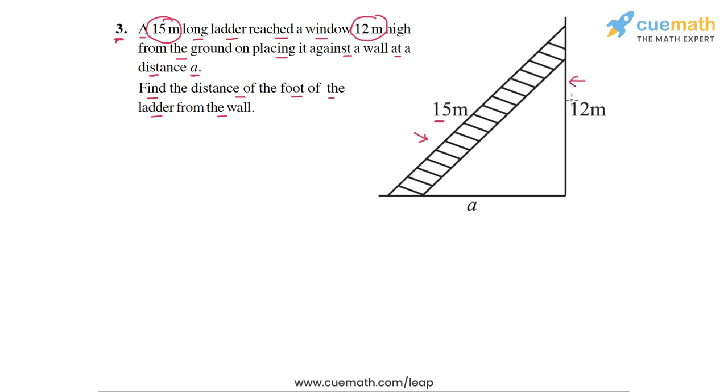This is the wall such that it reaches a window. The window would be somewhere here and this window is 12 meters above the ground and the foot of the ladder is at a distance of a meters from the wall. So we have to find this distance a.